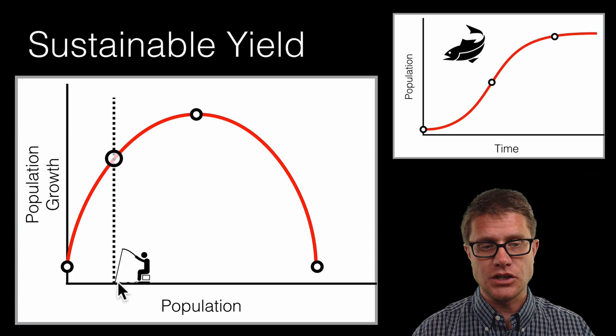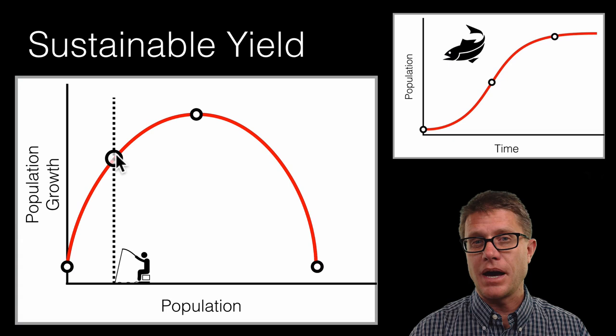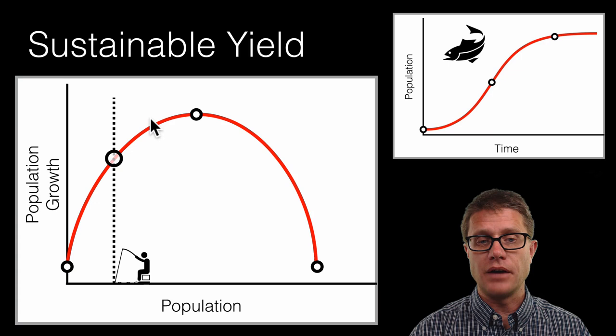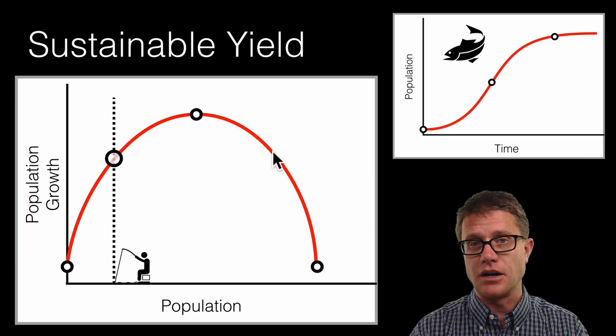And so let us say for example that at this population right here we decide to catch fish at a specific rate right here. So that is matching the growth rate. And so what is going to happen to the population over time? It is going to stay right there. If you ever catch fish at the same rate at which this red line exists it will stay right there. The population will never change.